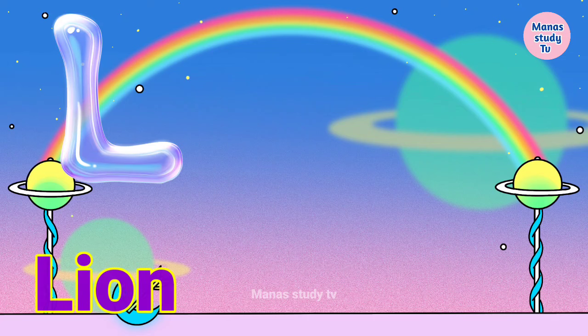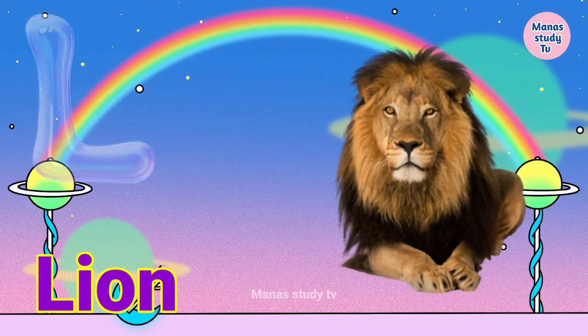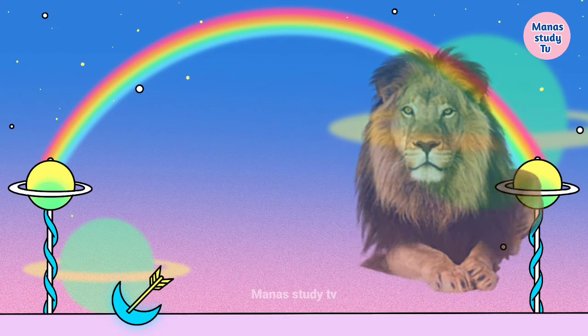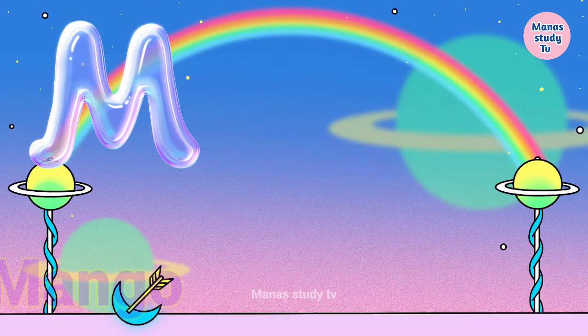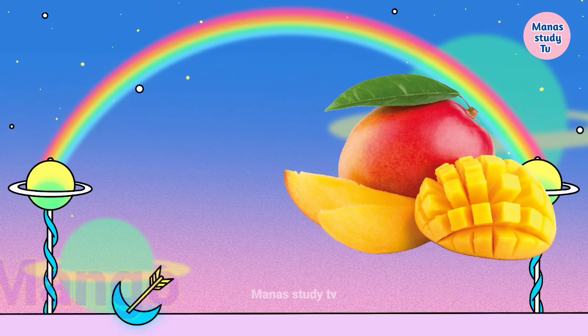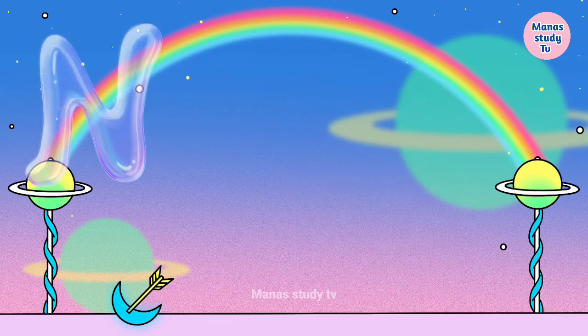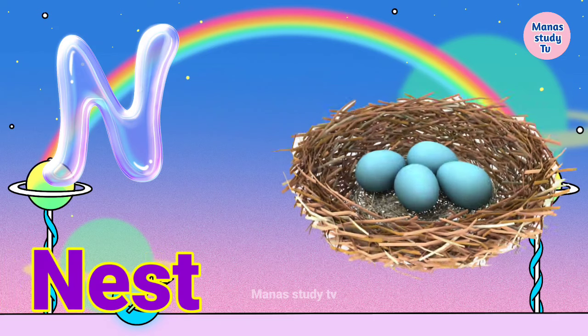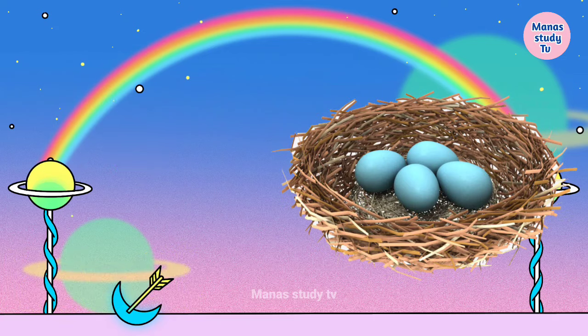L. L for lion, lion means safe. M. M for mango, mango means arm. N. N for nest, nest means gosla.